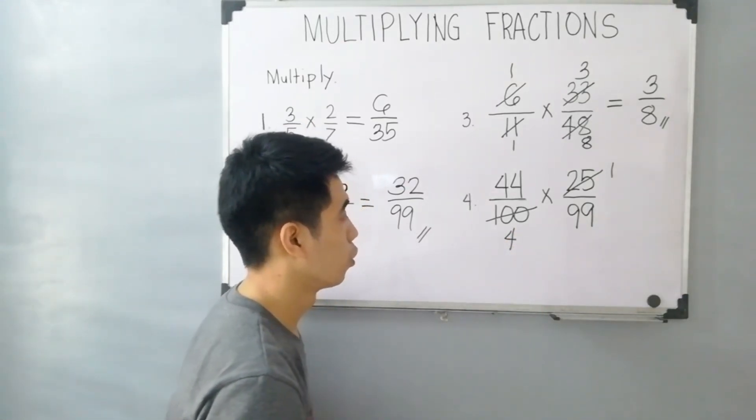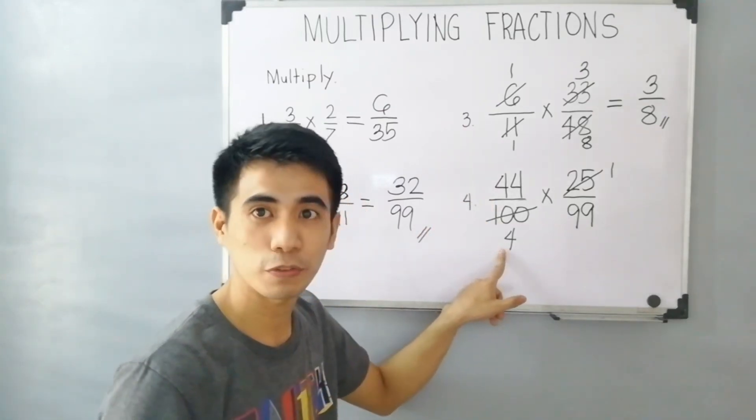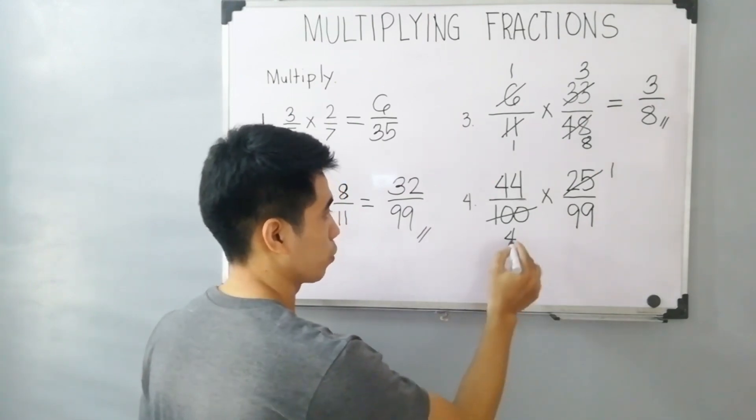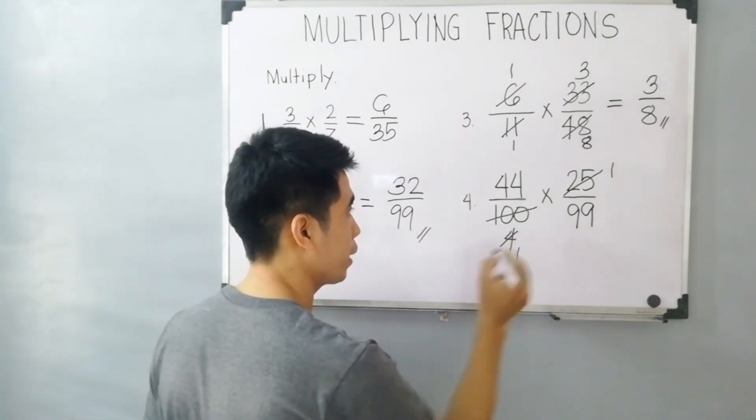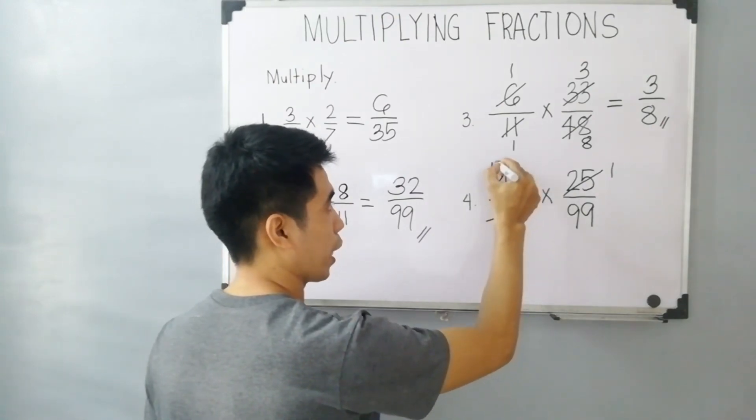Now, another one, 44 and 4. We can simplify 44 and 4. Therefore, divide it by 4. 4 divided by 4 is 1. 44 divided by 4 is 11.